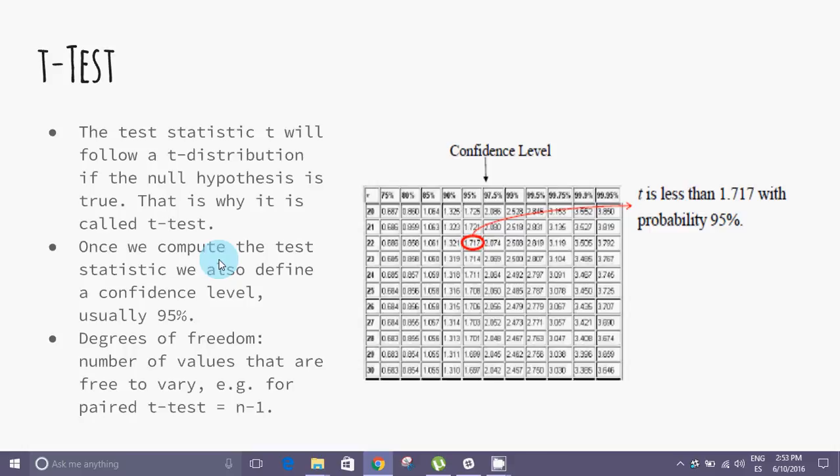To summarize, we only have to compute t, set alpha, and use a lookup table to check if our value t is higher than the value in the table. If yes, then the two sets of observations are different and the null hypothesis is rejected.